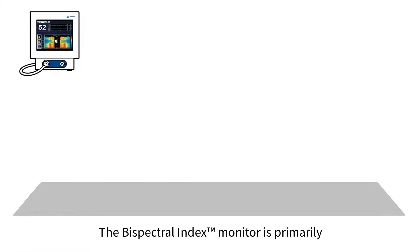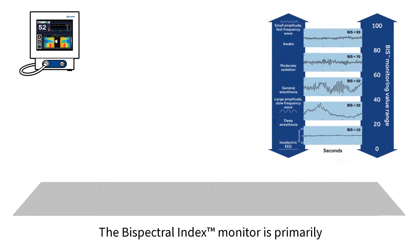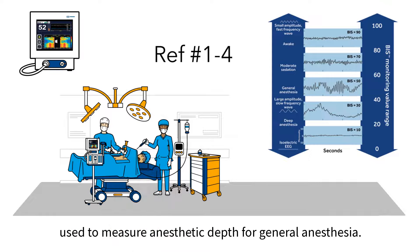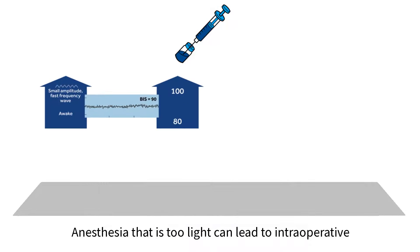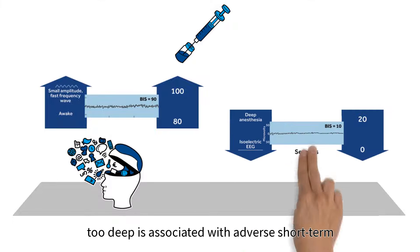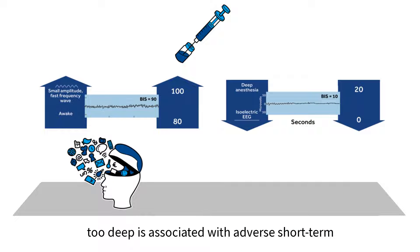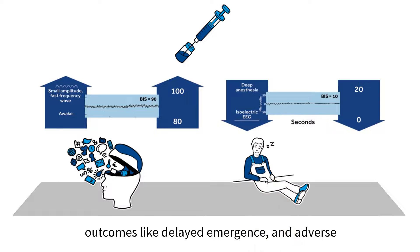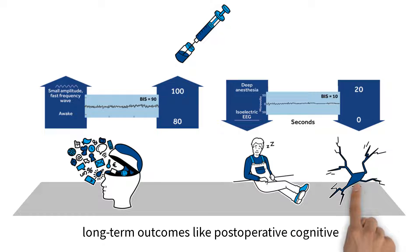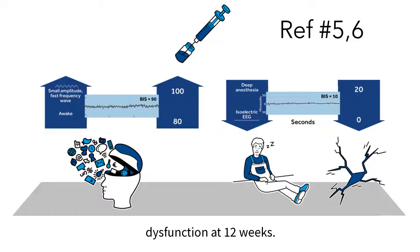The Bispectral Index Monitor is primarily used to measure anesthetic depth for general anesthesia. Anesthesia that is too light can lead to intraoperative awareness with recall, whereas anesthesia that is too deep is associated with adverse short-term outcomes like delayed emergence and adverse long-term outcomes like post-operative cognitive dysfunction at 12 weeks.